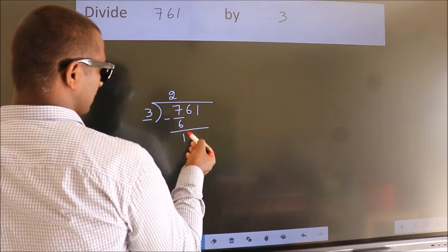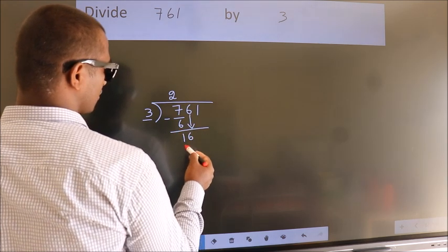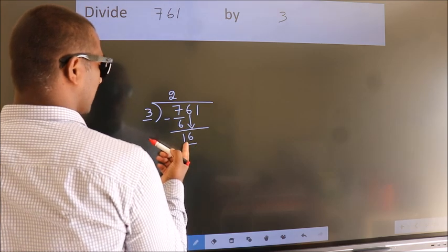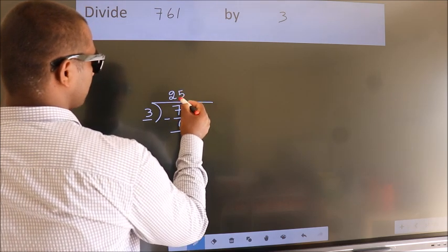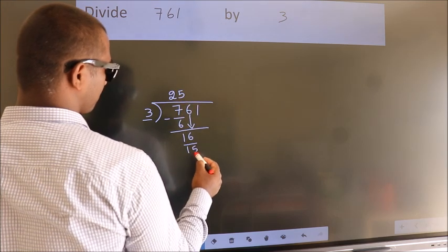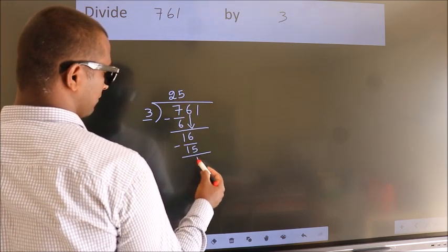After this, bring down the beside number. So, 6 down. So, 16. A number close to 16 in the 3 table is 3 fives 15. Now we subtract. We get 1.